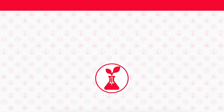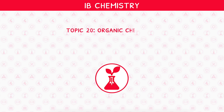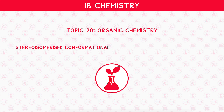Welcome back to our higher-level IB Chemistry video series. This is the first video in IB Chemistry Topic 20, Organic Chemistry, where we will be looking at stereoisomerism, including conformational isomers and configurational isomers.